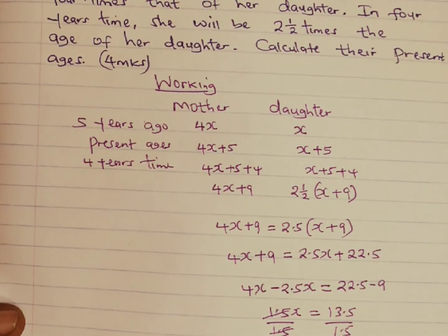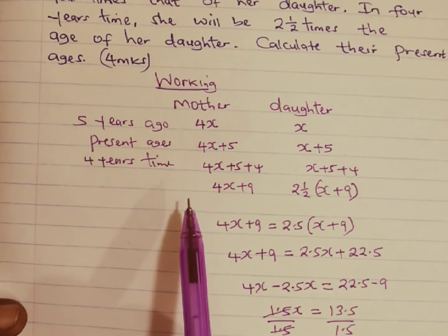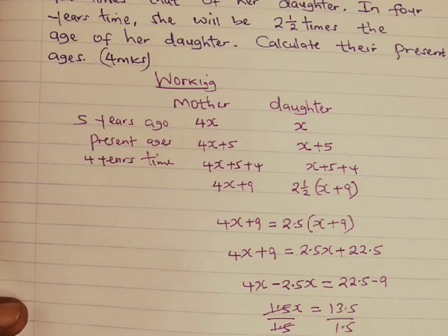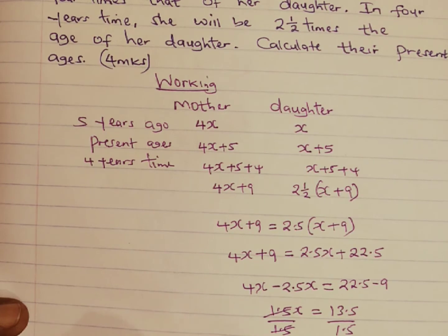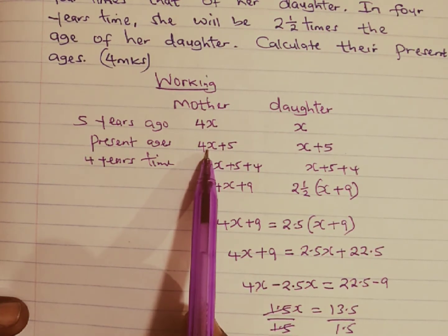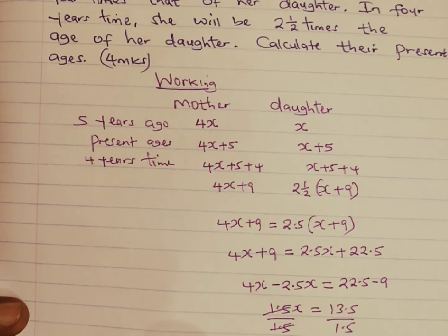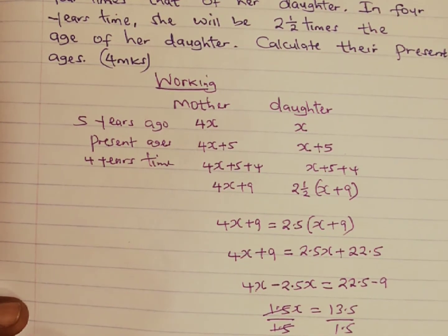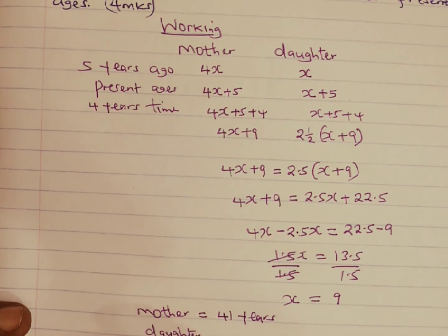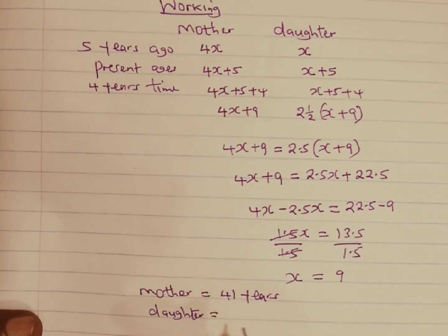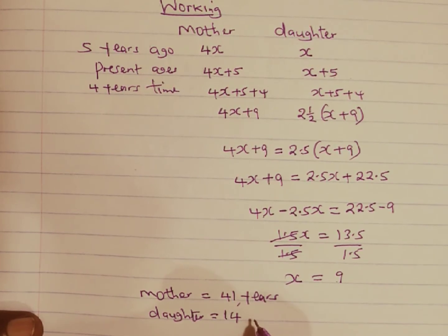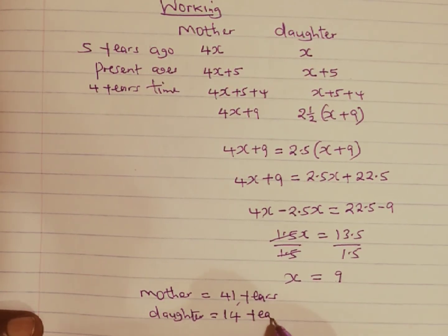The question requires us to calculate their present ages. For the mother, we have 4X plus five, which is four times nine plus five: thirty-six plus five gives forty-one years. For the daughter, X plus five is nine plus five, which gives us fourteen years.